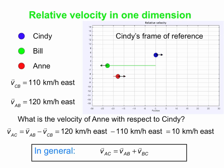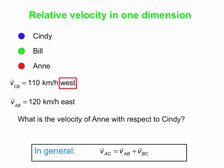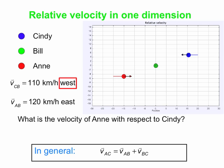So that's how you cope with things in one dimension. Now a very similar example — we'll just change one piece. Everything else is the same except now Cindy, with respect to Bill, is going 110 kilometers per hour west, not east. So Bill is on a bridge looking down on the Mass Pike, and he sees Cindy traveling west and Ann traveling east.